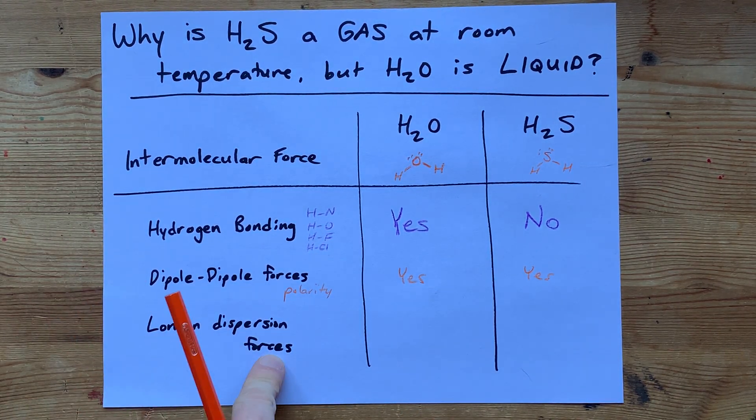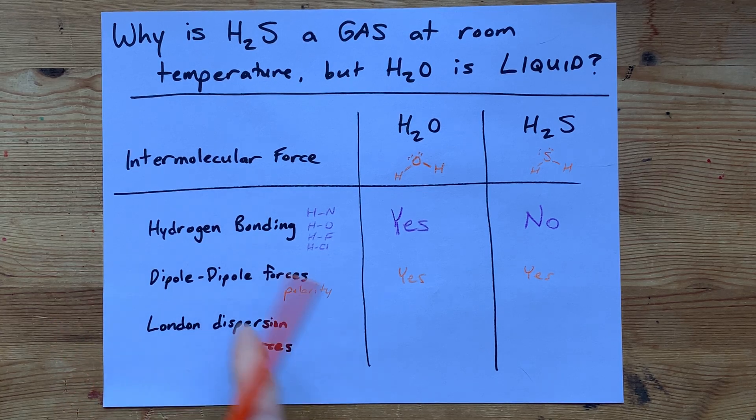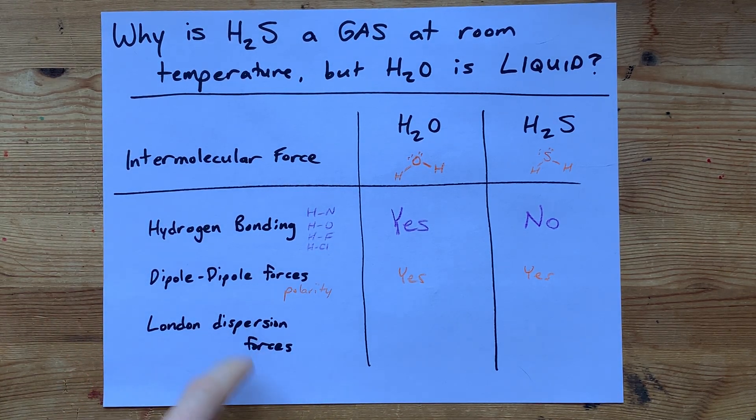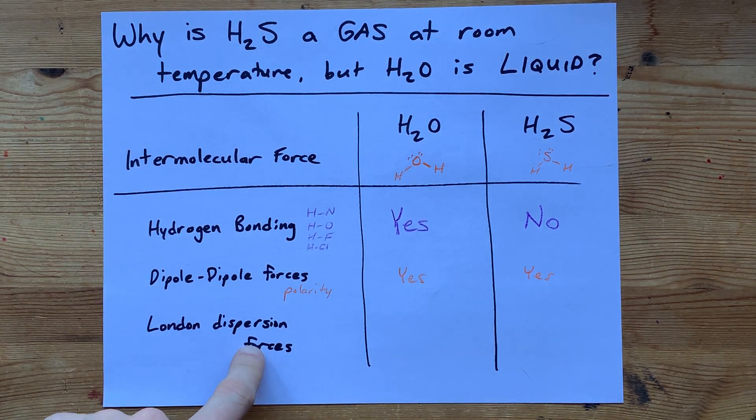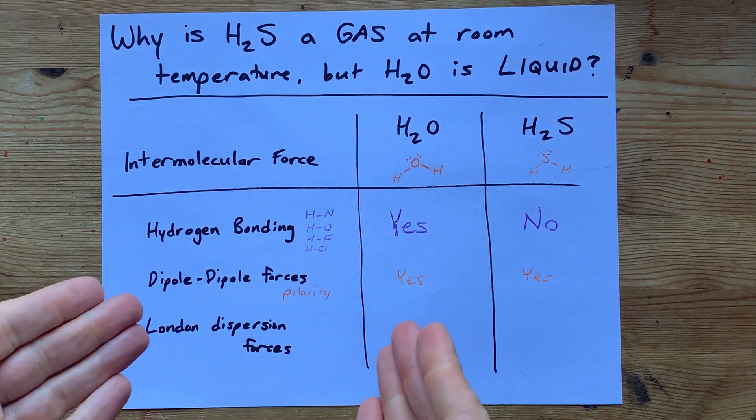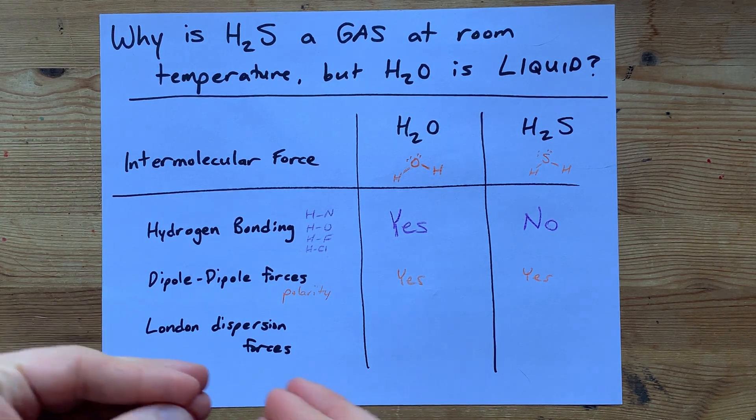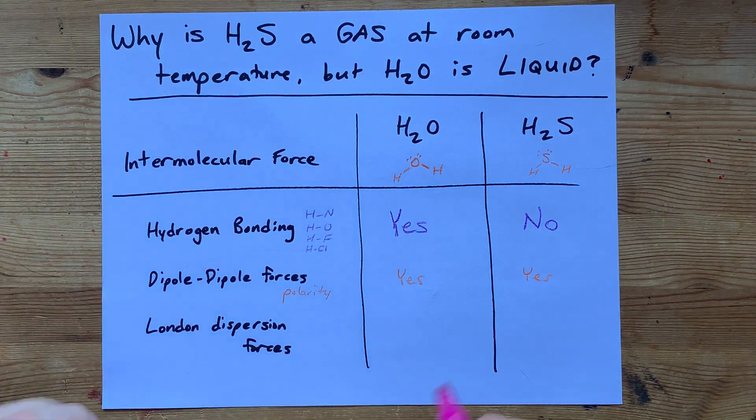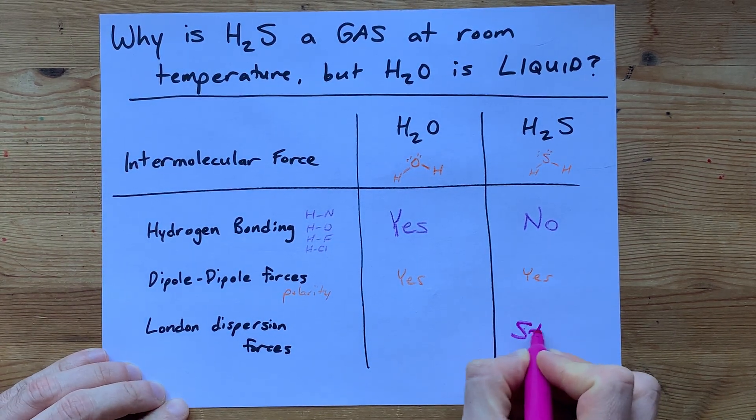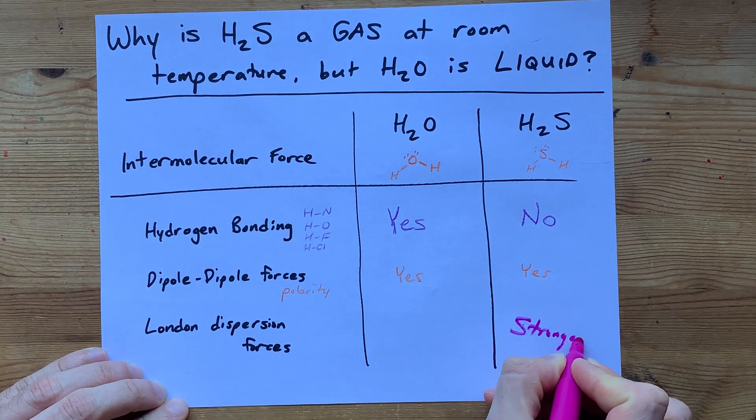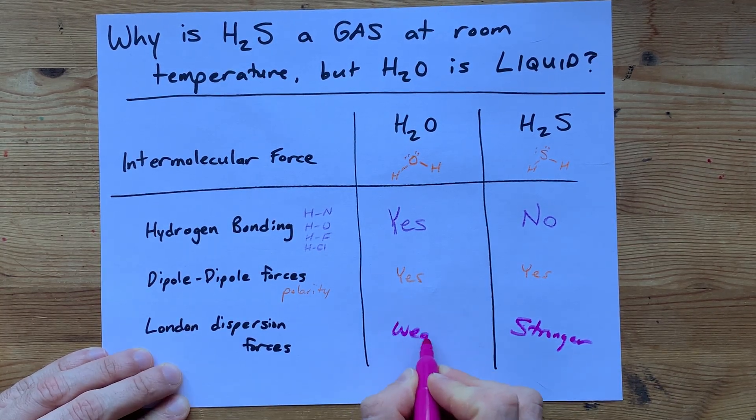And then we go down to something called dispersion forces, which some teachers also call London forces. And that, all molecules have these. And we generally say that the larger the molecule, the stronger those forces. So H2S will have relatively stronger London dispersion forces than water.